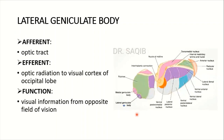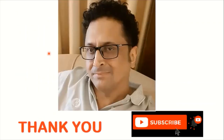The lateral geniculate body: its afferent is the optic tract and its efferent is the optic radiation to the visual cortex in the occipital lobe. Its function is visual information from the opposite visual field. The memory tip is 'L for Light.' This concludes the lecture on thalamic connections.